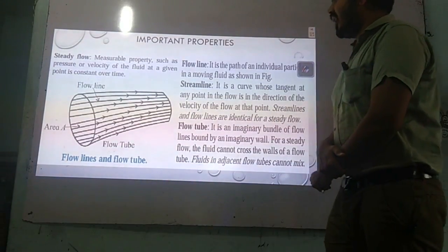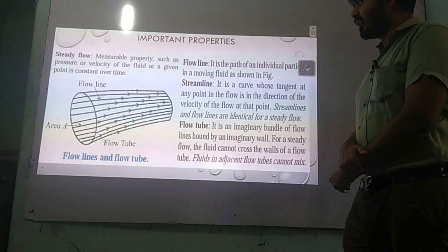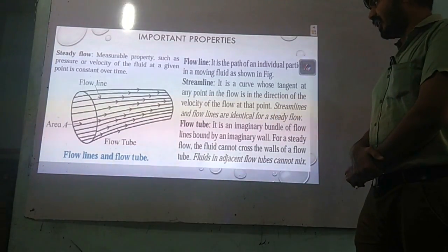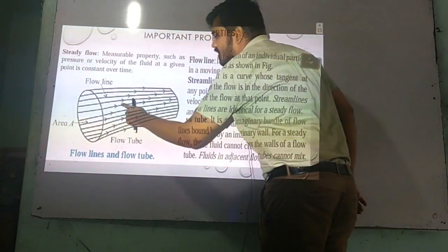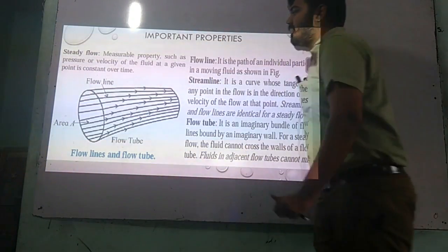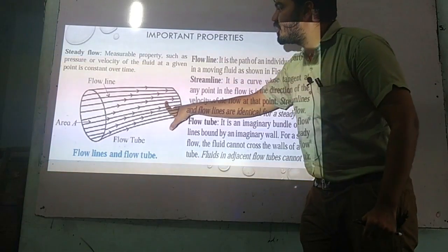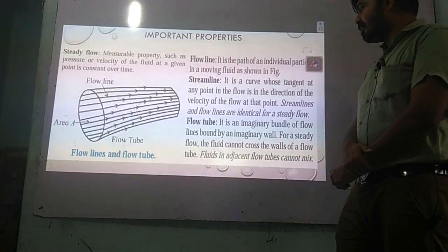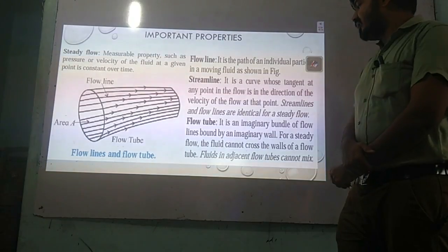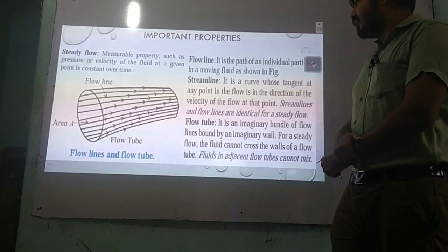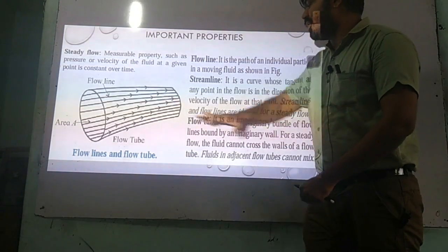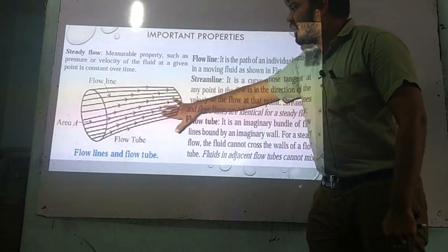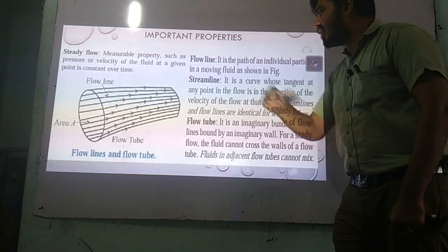Next is flow line — it is the path followed by moving particles. If you draw a tangent to this flow line, those tangents will be parallel and will show the direction of flow. Such lines are called streamlines. Streamline and flow line are actually identical; such flow is related to steady flow. Whenever these lines are parallel and do not cross each other, the imaginary lines through which particles are flowing are called streamlines.